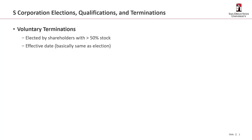An S-corporation election can be terminated. That can be done voluntarily — that is, elected by shareholders with greater than 50% of the stock. The effective date basically works the same as the election date: if you do it by the original filing date, you get the termination for that whole year; otherwise, you have to wait a year and the termination of the S-election becomes effective the following year.